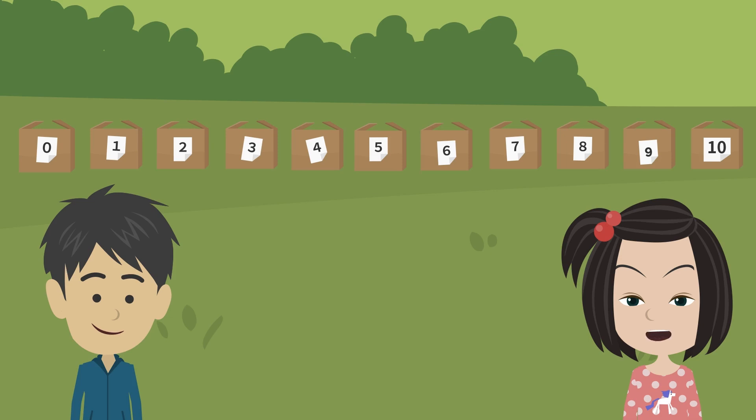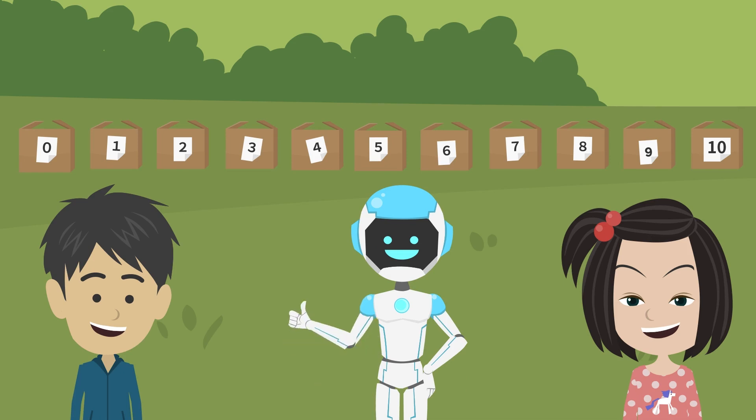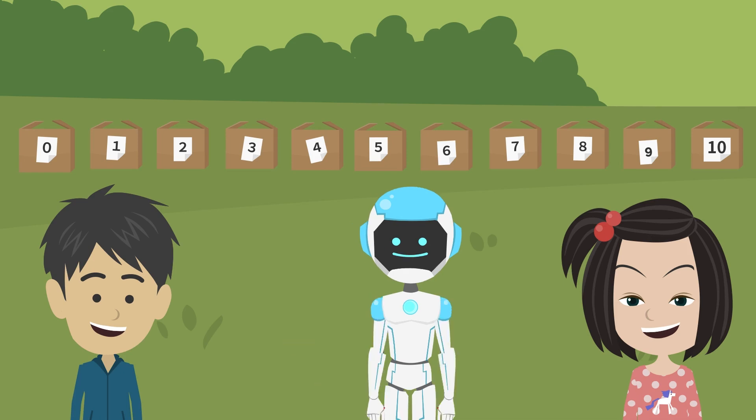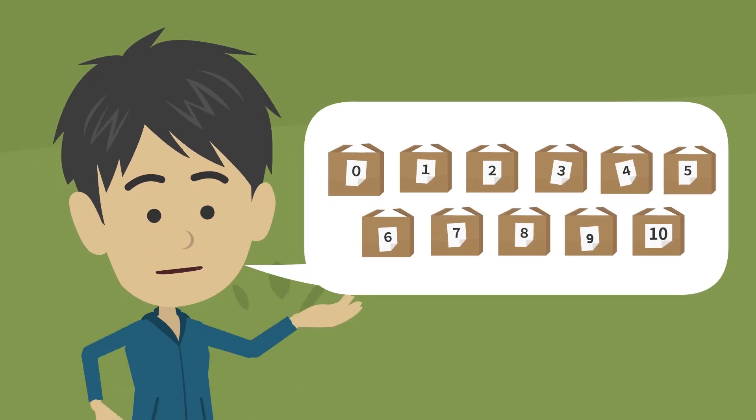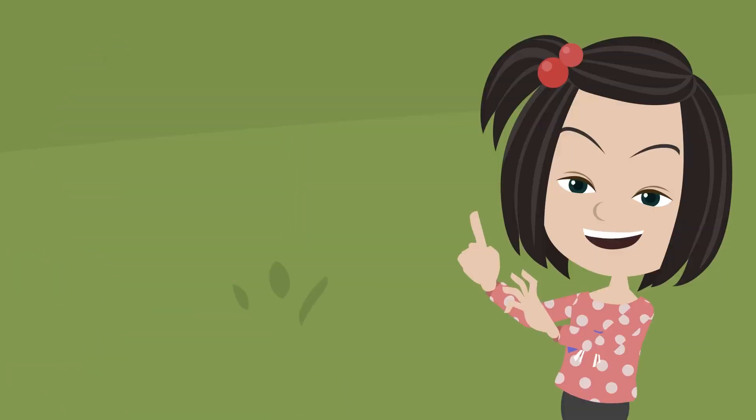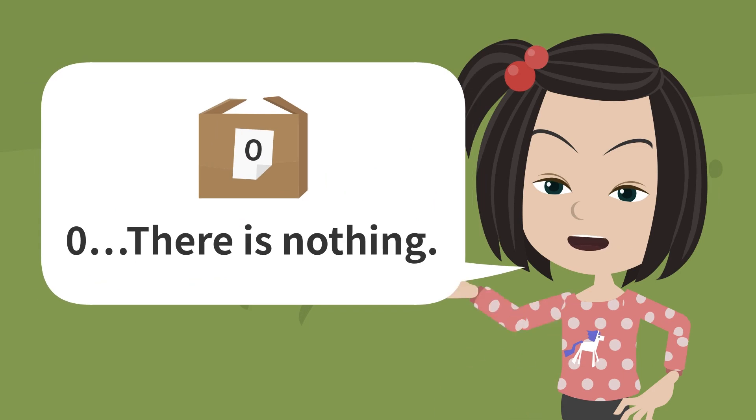Next, let's count from the opposite side. 10, 9, 8, 7, 6, 5, 4, 3, 2, 1, 0. Very well done. What did you guys learn today? The order of numbers up to 10. And we learned about the meaning of the number 0.